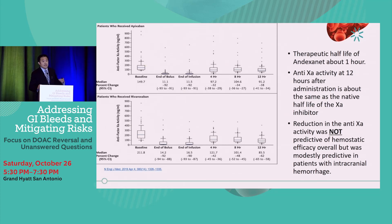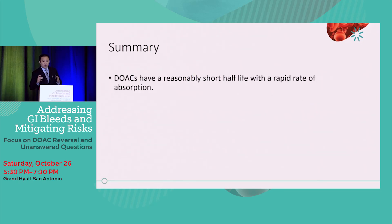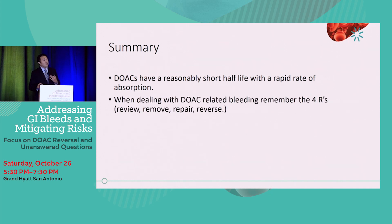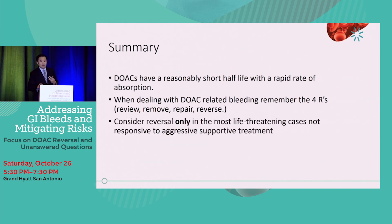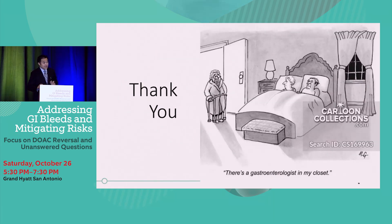But in the end, in the ED, when a patient is this unstable, we do everything we possibly can to save their life. In summary: DOACs have reasonably short half-lives with a rapid rate of absorption. When dealing with DOAC-related bleeds, remember the four R's — Review, Remove, Repair, Reverse. Only consider reversal agents in the most life-threatening of cases not responsive to aggressive supportive treatment. Thank you very much for your time.